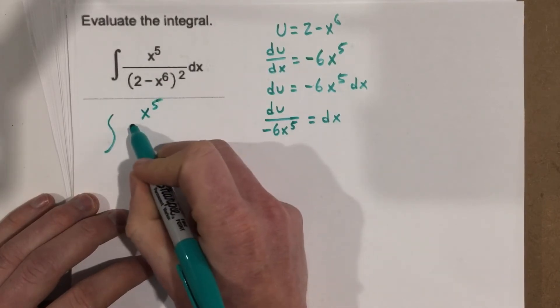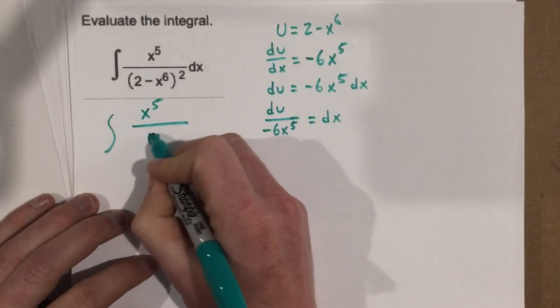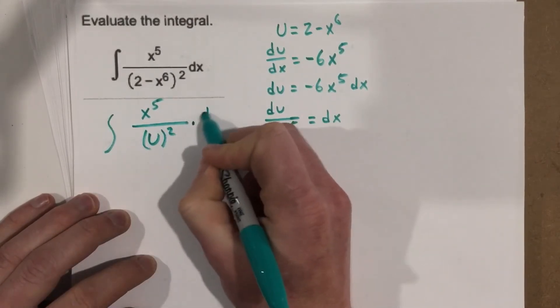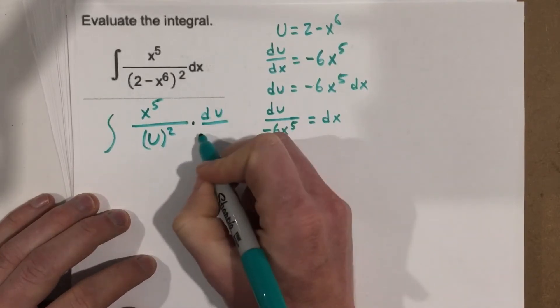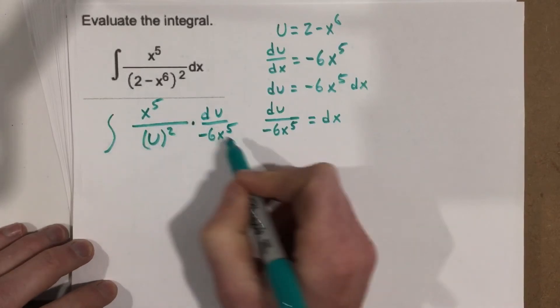So we get integral of x to the 5th over u squared times du over negative 6x to the 5th. You can see the x to the 5th cancel.